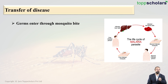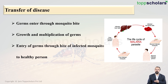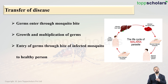To summarize the transmission process: first, the germs enter through the mosquito bite; then there is growth and multiplication of the germs; and eventually there is entry of germs through the bite of an infected mosquito into a healthy person.